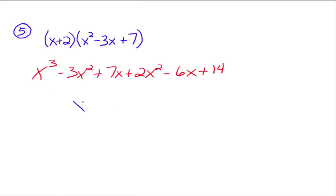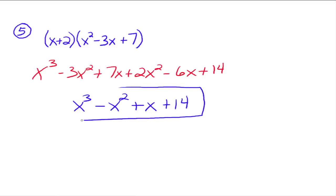Now combine like terms: we have x cubed, negative 3x squared plus positive 2x squared gives negative x squared, positive 7x minus 6x gives positive x, and 14 left over. So x cubed minus x squared plus x plus 14 is what these two things multiply out to be. Study well, and please let me know if you have any questions.